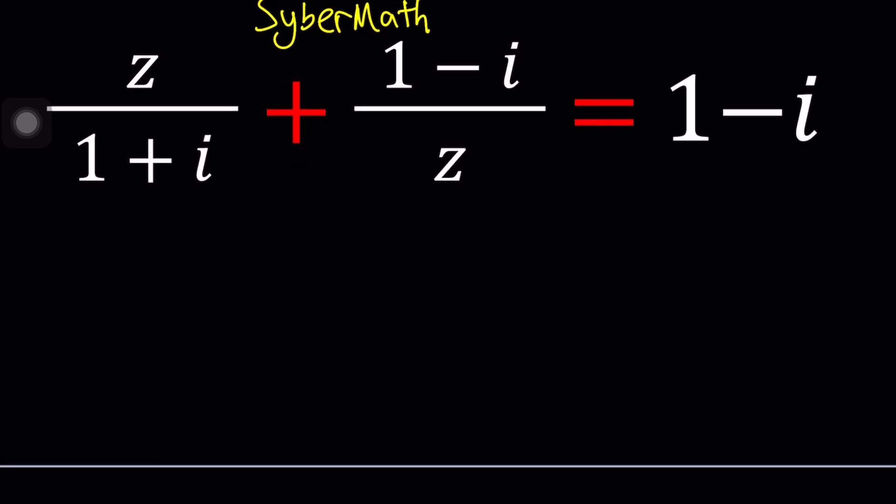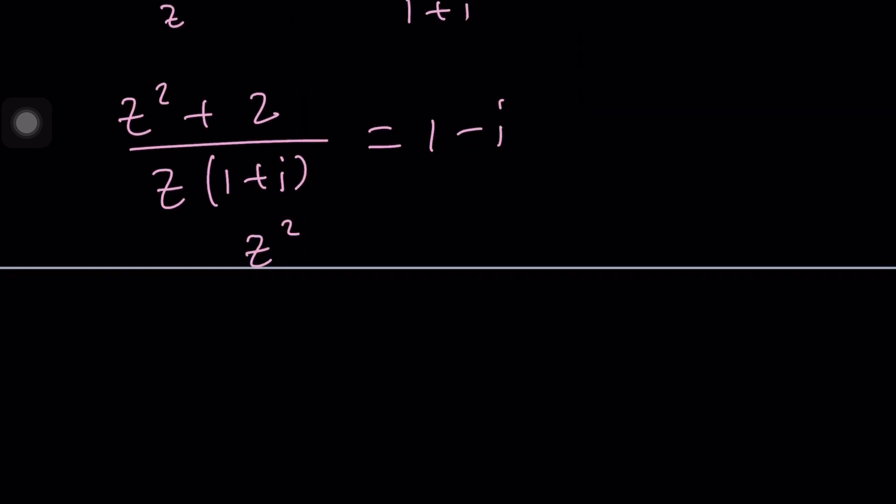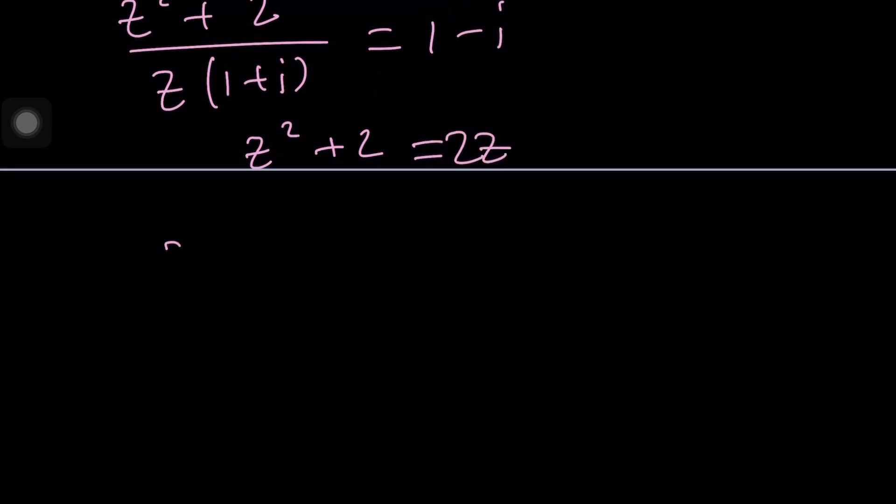So now let's go ahead and I guess directly make a common denominator here. Multiply by z, multiply by 1 plus i. It's going to give us z squared plus 2, divide it by z times 1 plus i equals 1 minus i. And then this gives us z squared plus 2 equals z times that, and that's going to be 2z, and then we get the following quadratic equation.